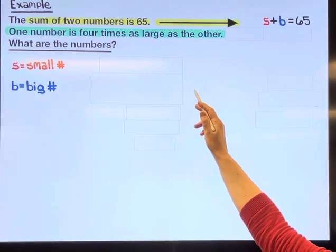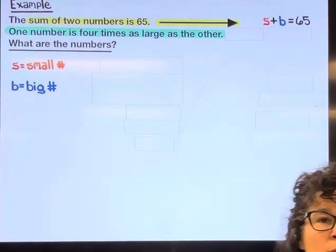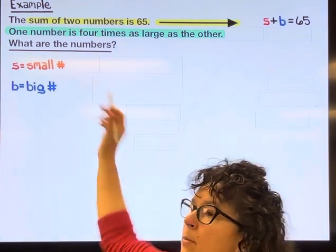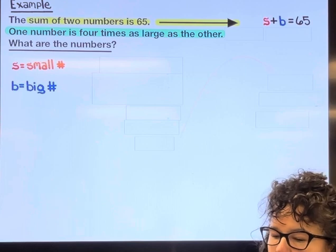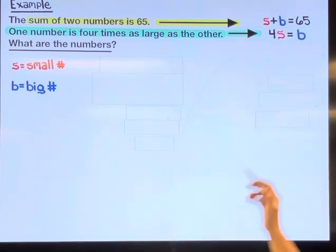The next sentence says one number is four times as large as the other one. So in other words, if we take our small number and multiply it by four, we're going to get our large number. So that leads us to the equation: the big number equals four multiplied by s.